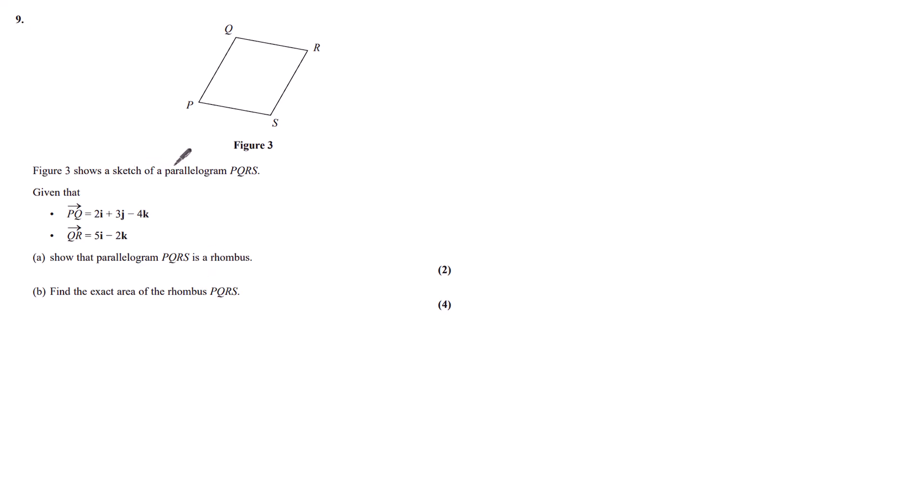Question 9. Figure 3 shows a sketch of a parallelogram PQRS. Given that PQ is 2i plus 3j minus 4k and QR is 5i minus 2k.